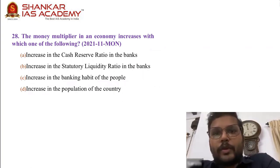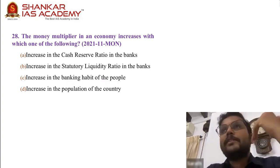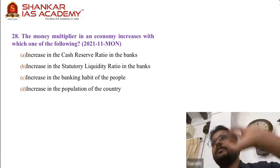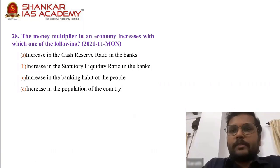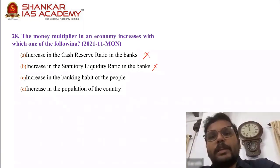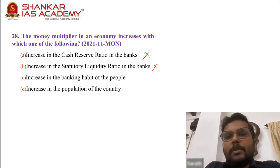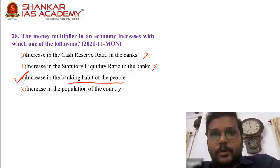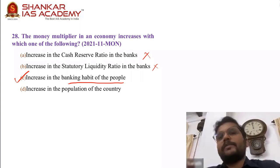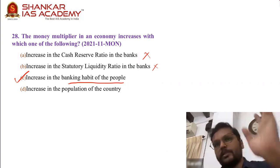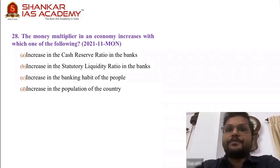Question 28: The money multiplier in an economy increases with which one of the following? Increase in CRR means more money is kept with the bank itself, less money given out as loans, so money multiplier tends to go down. Similarly, SLR increasing means money available to give loans goes down. So A and B are not the answer. Increase in population may or may not have an impact because what matters is how many people are using the banking system. C — increase in banking habits of the people — is the answer. 28, C.